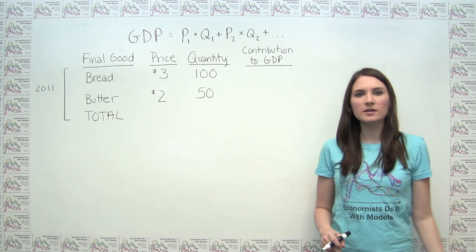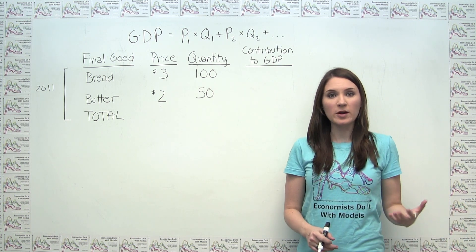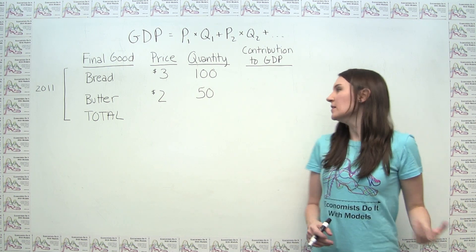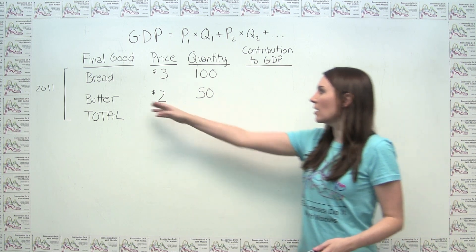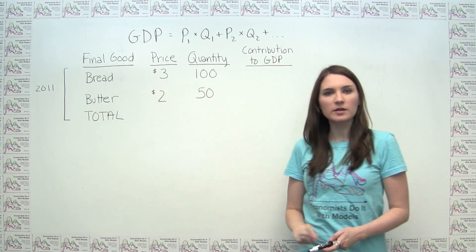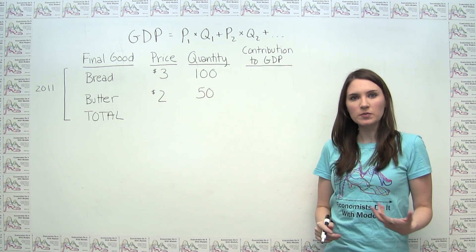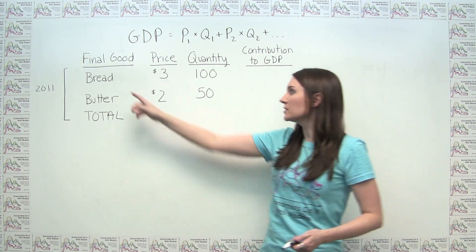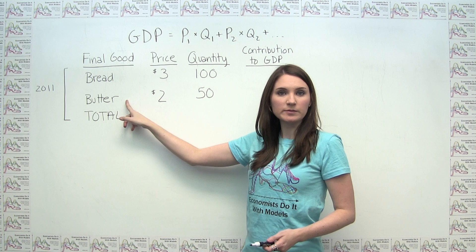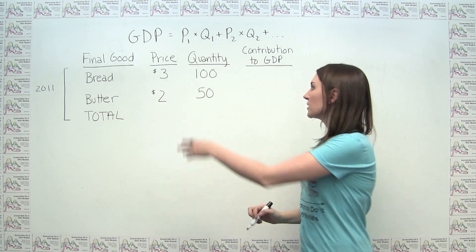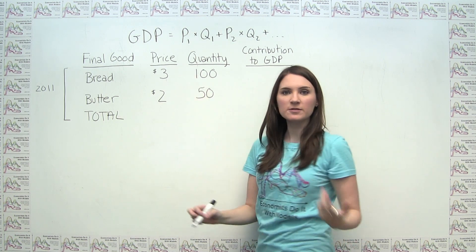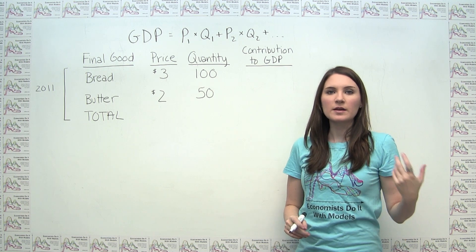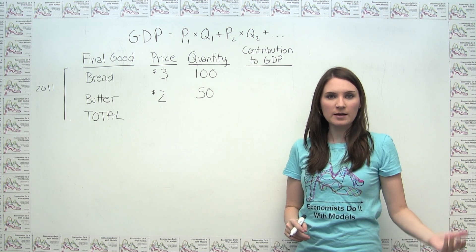To illustrate how to calculate GDP, let's do a numerical example. In this example, we're going to consider a very simple small economy that actually only produces two final goods, and those two final goods are bread and butter. And you'll notice that if we're given the prices and quantities of each of the final goods, then it's pretty easy and straightforward to calculate GDP.